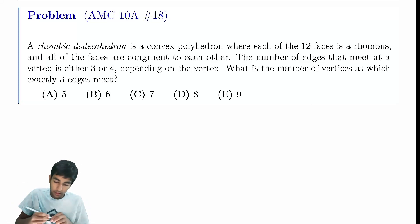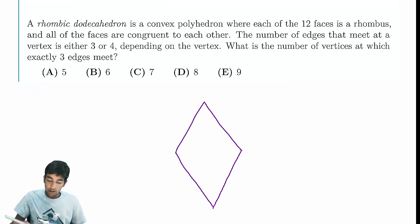The first thing to notice in these types of 3D geometry problems is you have 12 rhombic faces. Let's just draw a rhombus. Every face has 4 edges. So how many edges are there? 12 faces, each one has 4 edges. Is it just 48?